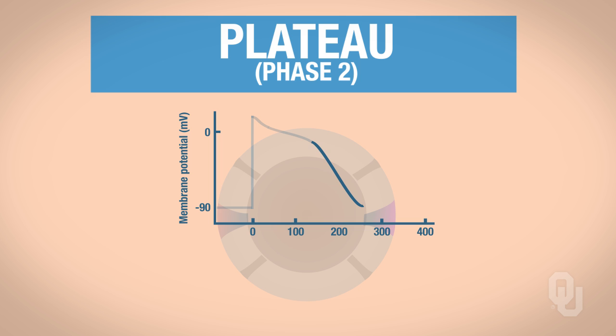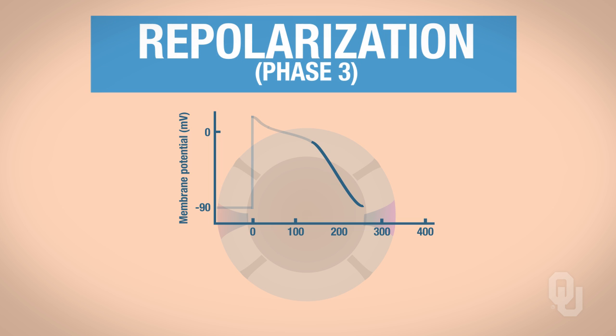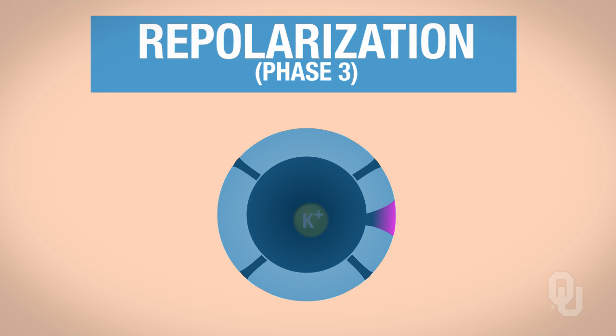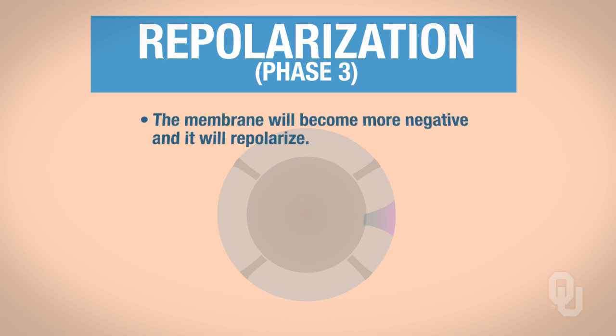The next phase is phase three, which is repolarization. The voltage-gated L-type calcium channels close. However, the voltage-gated potassium channels remain open. Because those remain open, you have potassium efflux, and the membrane becomes more negative and repolarizes.